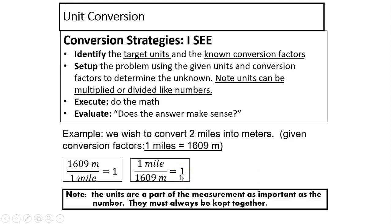To convert is to really multiply by one. Two miles multiplied by one is still two miles. But which one do we use to convert from miles to meters? Obviously the one on the left, because this way mile and mile can cancel. You're going to be left with meters.